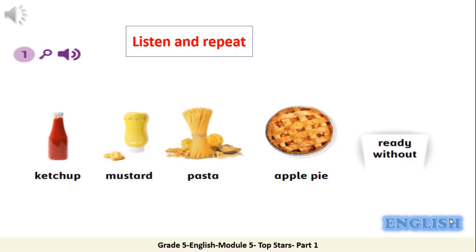After learning the meaning of the new words, it is a good idea to pronounce them correctly. Here you are going to listen and repeat. Module 5, Top Stars. Vocabulary: ketchup, mustard, pasta, apple pie, ready, without.